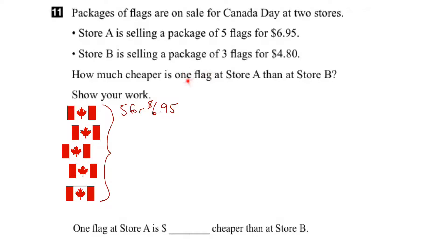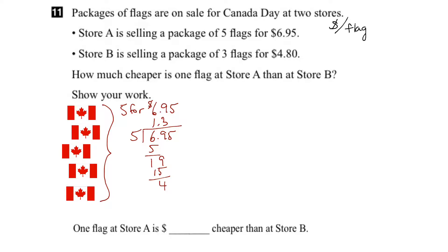Now we're going to compare the price of one flag, so we want to get the unit cost. That means we want to find the cost in dollars per flag. This 'per' symbol means division, so we take $6.95 and divide it by five. Five into six goes once, subtract, bring down the five. Five into forty-five goes nine times. So for store A the cost is $1.39 per flag.